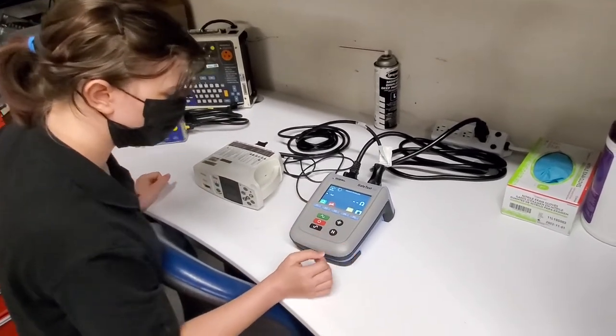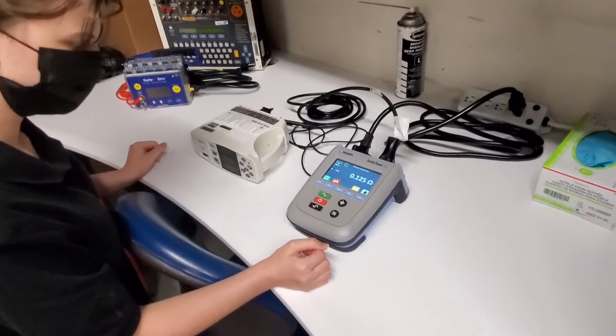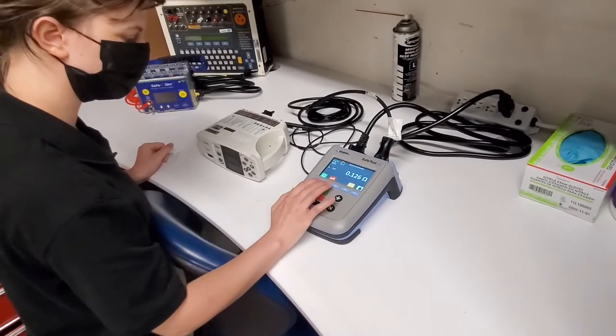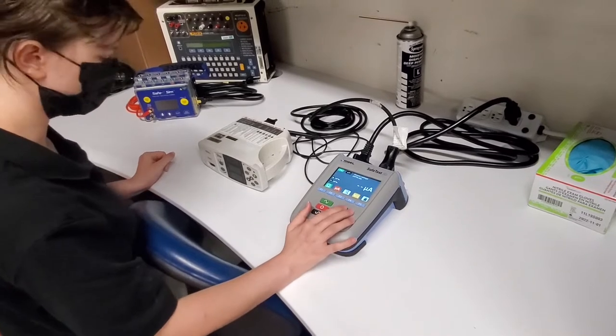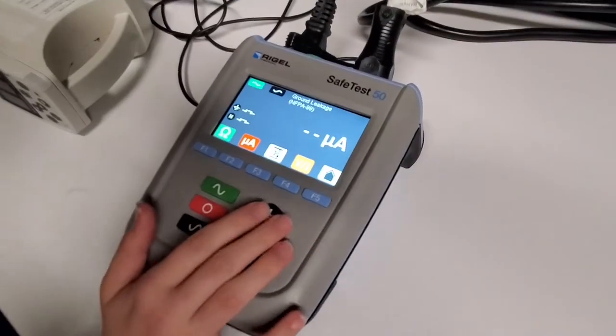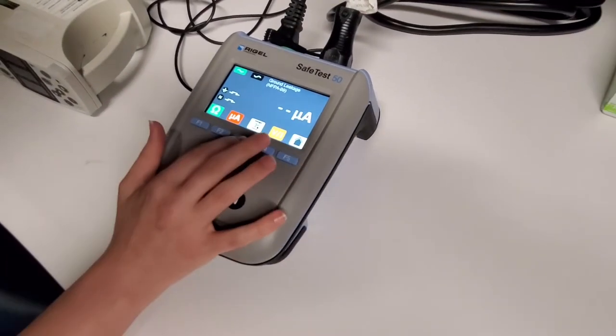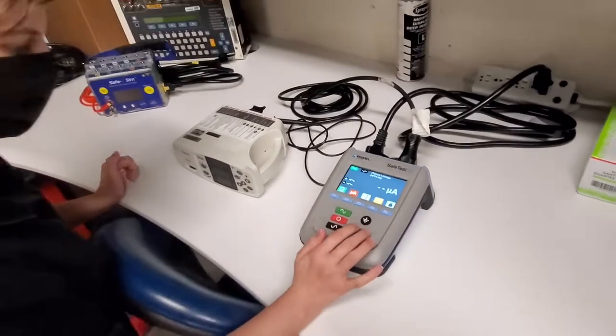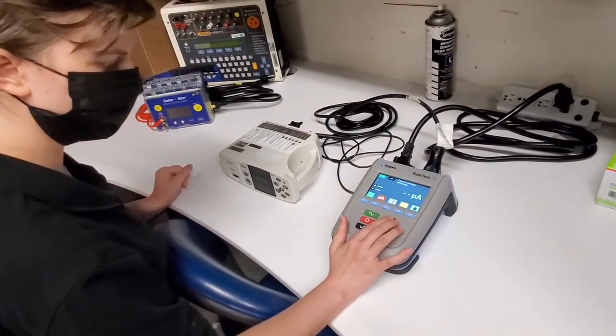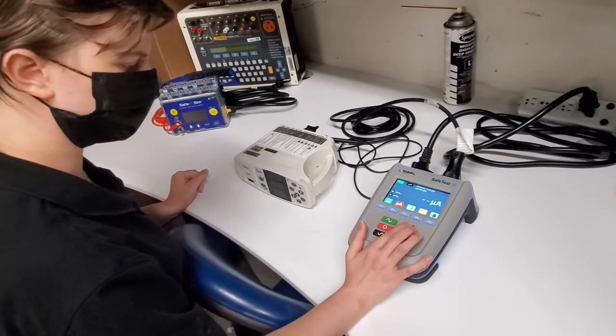So our first test we're going to do ground resistance. No problem. And let's see what setting are we on. We're on ground leakage, let's change the leakage. There you go. Chassis. And we're connected. So go ahead and green for go.